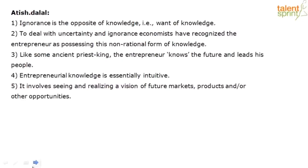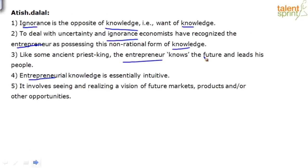Let's look at this. 'Ignorance is the opposite of knowledge' — this is a jumbled sentence exercise. Let's look for repeat words: entrepreneur, entrepreneur, entrepreneur. Other repeat words: ignorance, ignorance, knowledge, knowledge, knowledge.